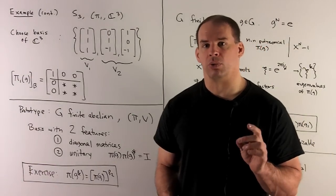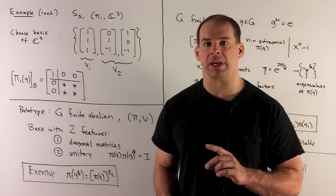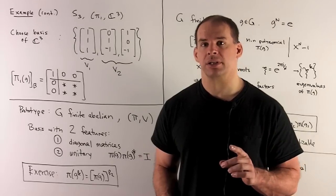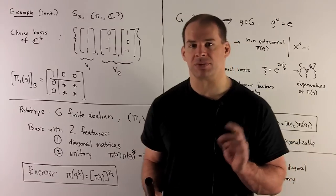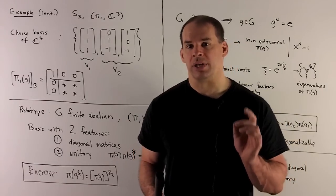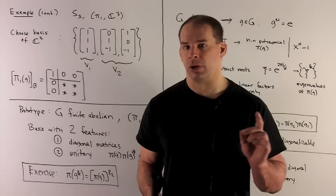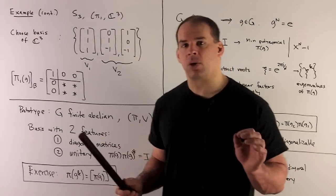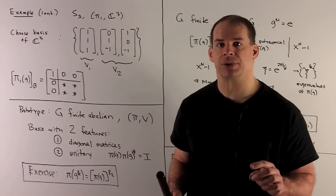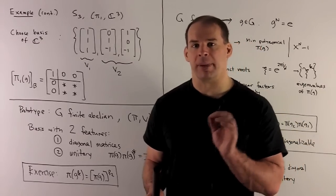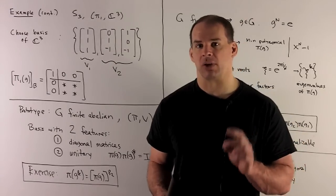We've written V as a direct sum of V₁ and V₂, where both are invariant subspaces. If I choose bases for V₁ and V₂, that gives me a basis for ℂ³, and we can consider our matrices π₁(g) with respect to this new basis. They're going to be in the form: a 1 in the upper left-hand corner, a 2×2 block in the lower right-hand corner, and zeros everywhere else. So our basis is going to put our matrices in block-diagonal form simultaneously. This is something we want to generalize.